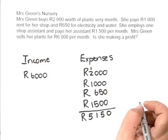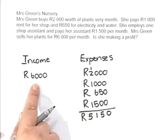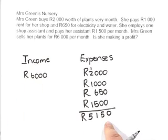Her income is 6,000 Rand. Is she making a profit? Indeed — she's getting in more money than she's paying out. Mrs. Green is quite smart; she's a good businesswoman making some profit. Now we need to check if Mrs. Pink is as smart and is also making a profit. Let's go to her nail boutique and see what she's getting in and what she's spending.